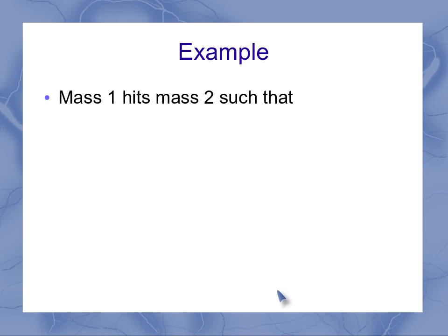So let's look at an example. Let's say I've got mass one hits mass two. And I'm going to set mass one to be 2 kg and mass two to be 3 kg. And they're moving such that mass one has a velocity of 4 m/s, and mass two has a velocity of 1 m/s.